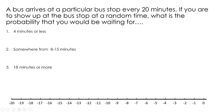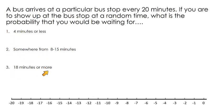I really like this next problem — it's an interesting application of geometric probability. A bus arrives at a particular bus stop every 20 minutes. If you show up at the bus stop at a random time, what is the probability that you would be waiting four minutes or less, between eight and 15 minutes, or 18 minutes or more? We can represent our waiting time with a number line.